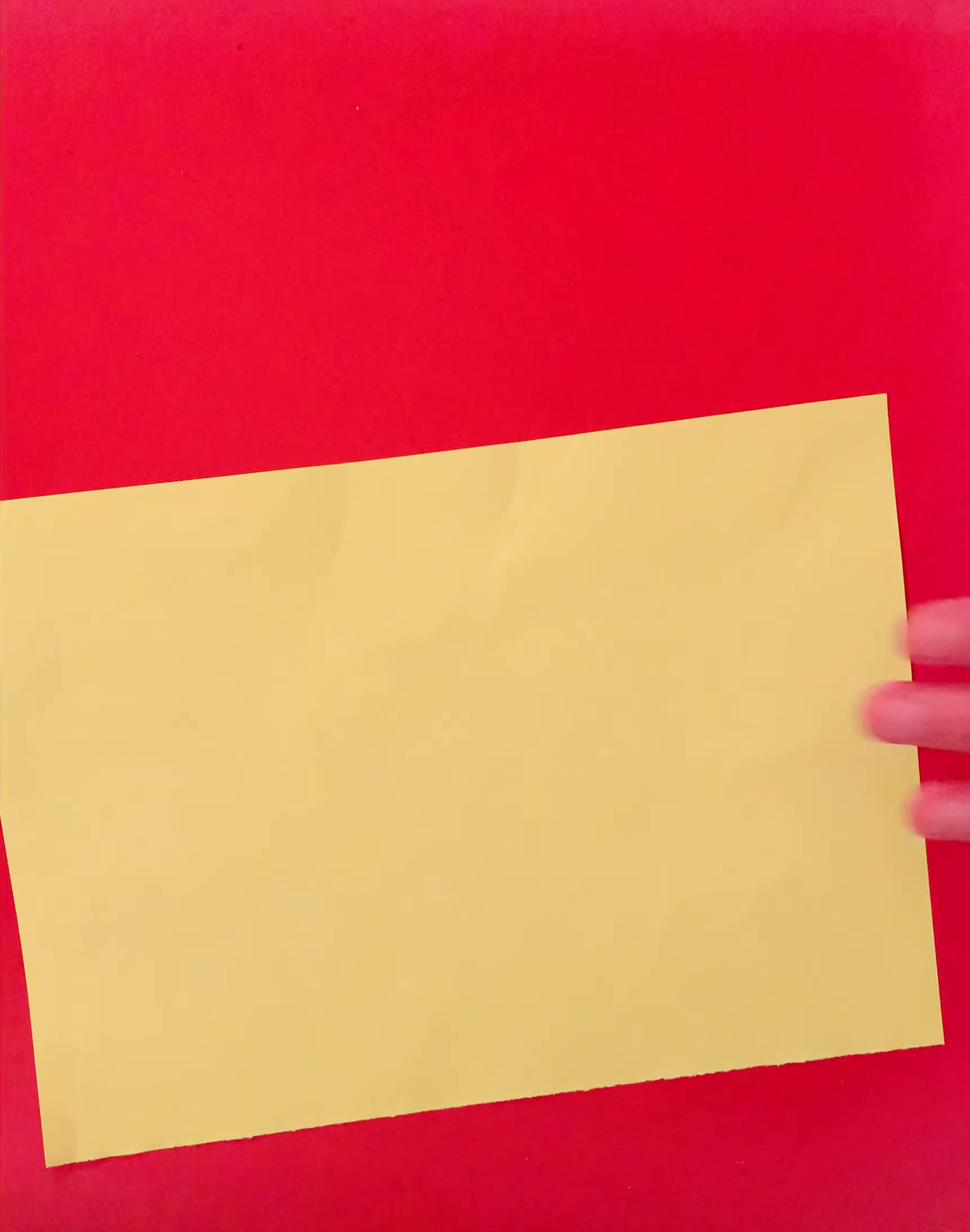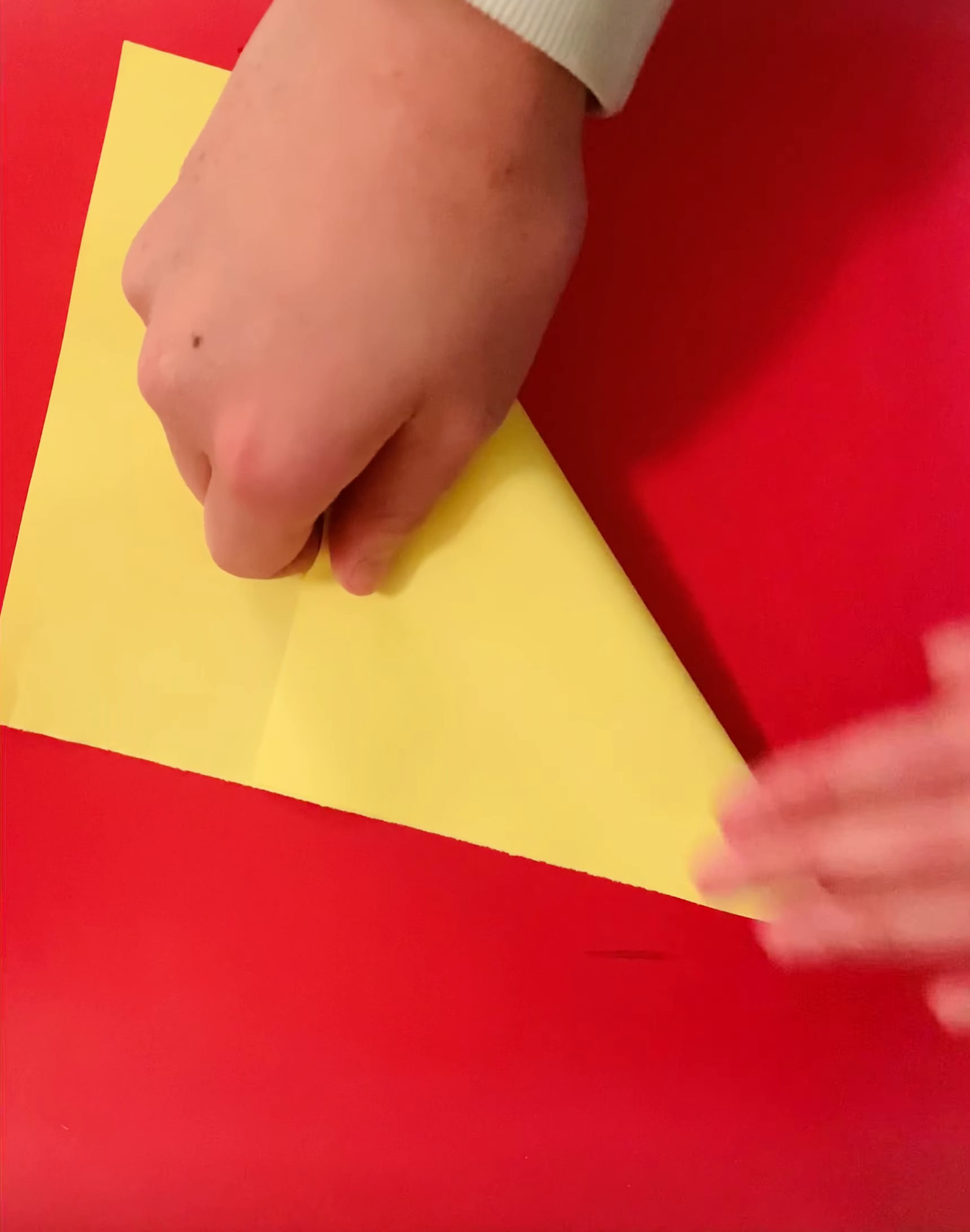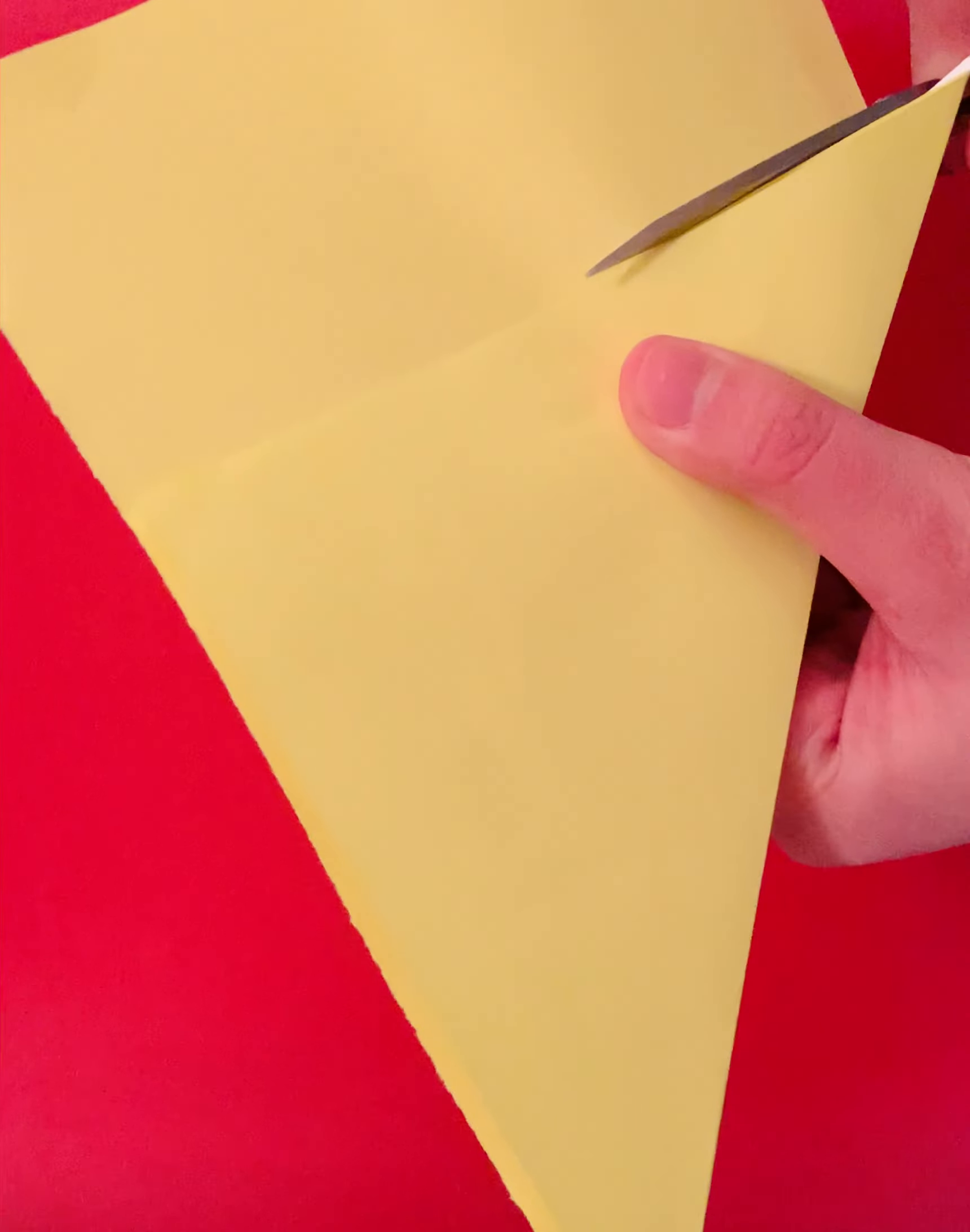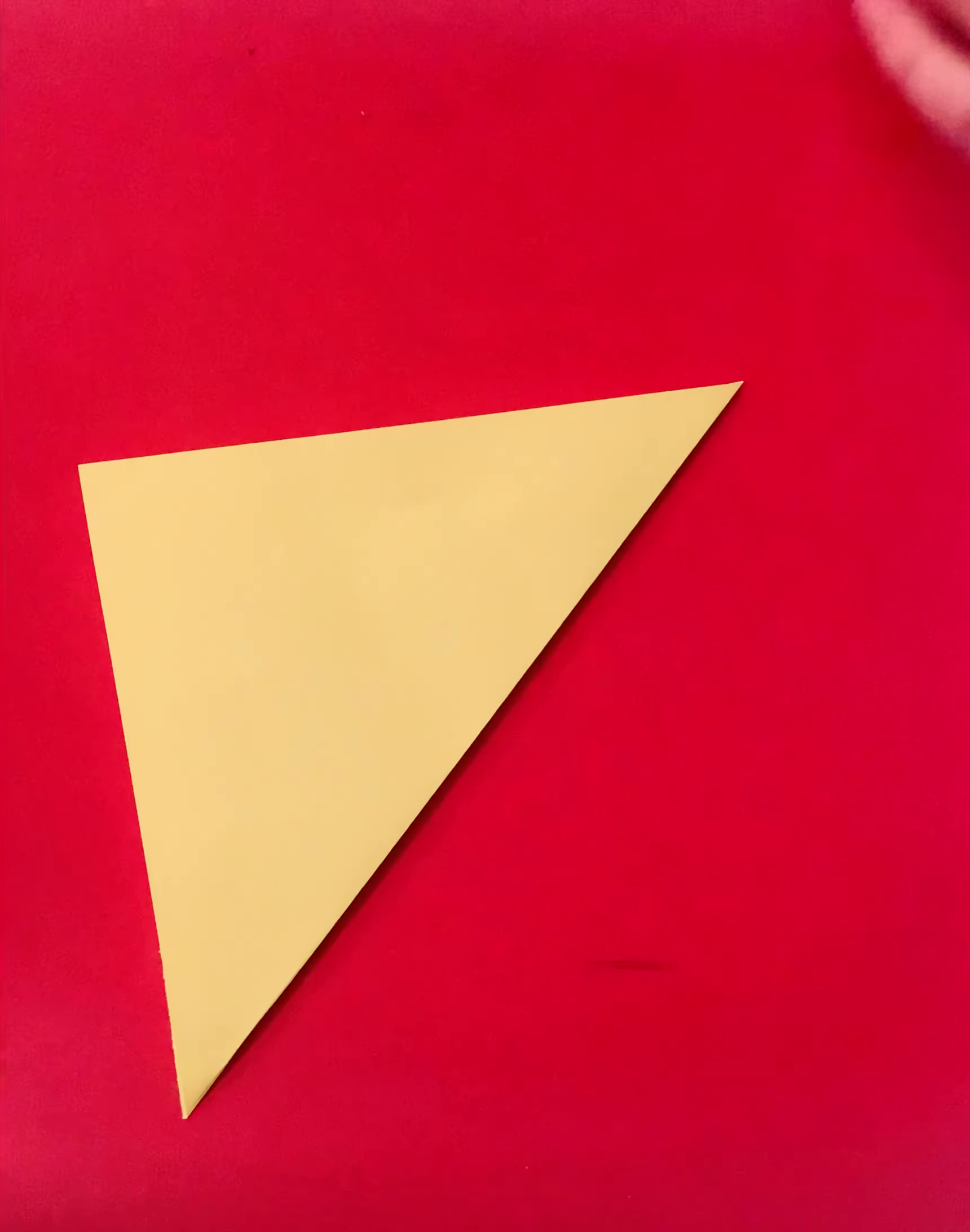So I have already pre-cut it like so and we are going to make a square piece of paper like this. There we go.